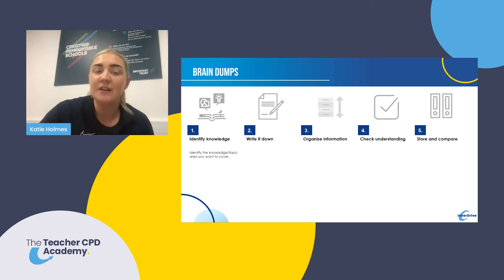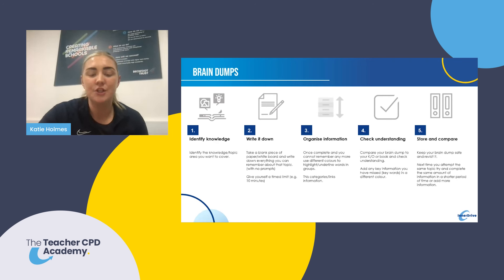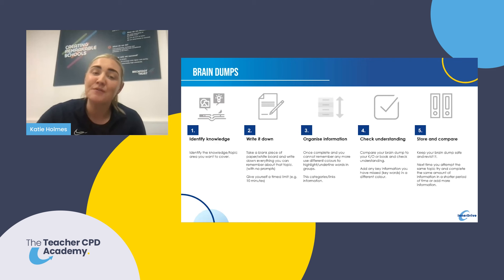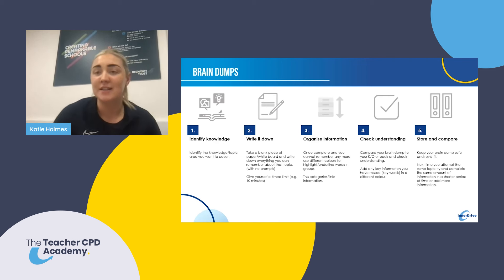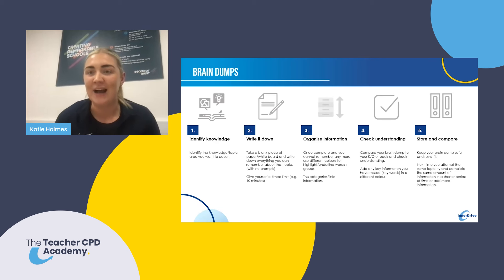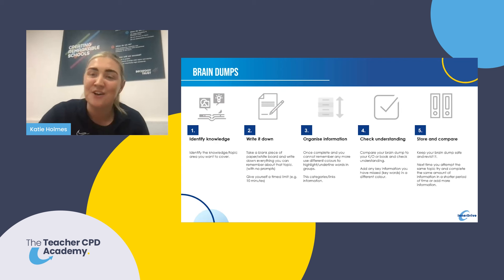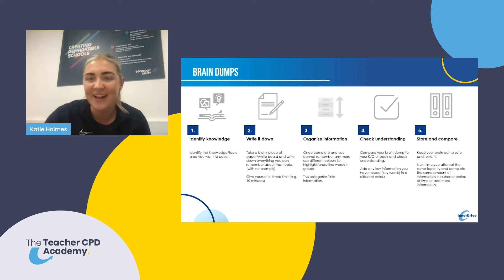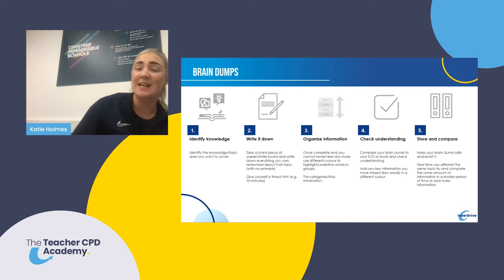Students write down as much as they can remember about a given topic — for example, Act One Scene One of Romeo and Juliet — within a time limit of around five minutes, because in exams there's no unlimited time. This can be done in a classroom or at home, on a whiteboard, a sheet of paper, or even on tables with whiteboard pen. Students love writing on tables, which helps with engagement. You might start with a longer time limit and gradually decrease it to make it more challenging.